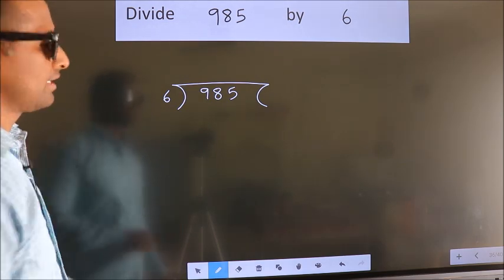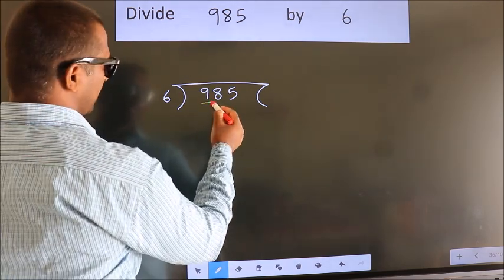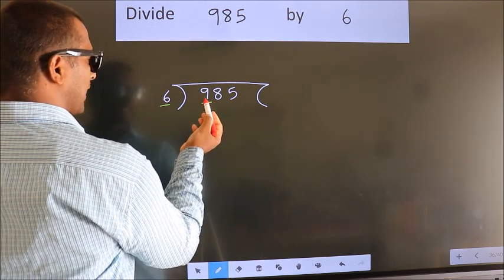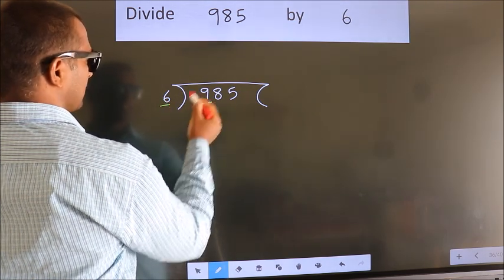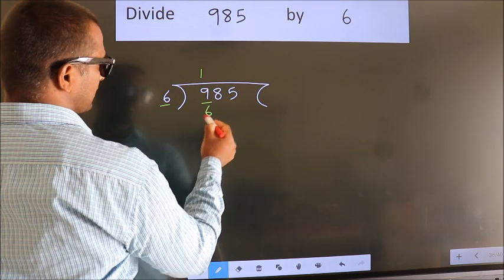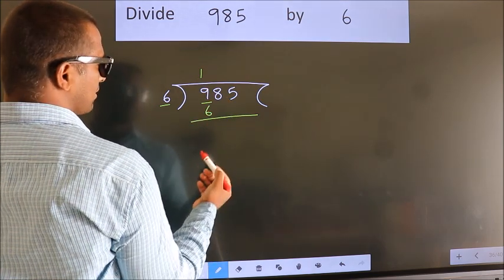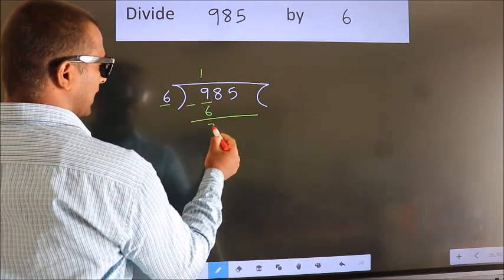Next. Here we have 9. Here, 6. A number close to 9 in the 6 table is 6, once 6. Now we should subtract. We get 3.